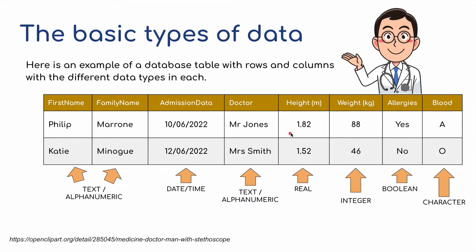I've got a little part of a database here for a doctor and his surgery, and we've got two of his patients. We have Philip Moroney. The date of administration was the 10th of June, the doctor's name, the height of the patient, and the weight. Philip Moroney's name would be text alphanumeric — letters, numbers, or a combination of both. Administration date is a date field — date and time. The doctor's name is again text alphanumeric. The height uses a real number because we've got a decimal. For the weight, we've rounded the kilograms up into whole numbers, therefore these are integers.